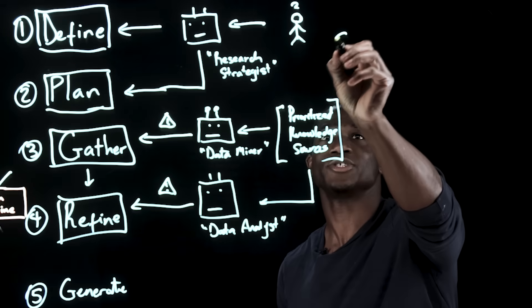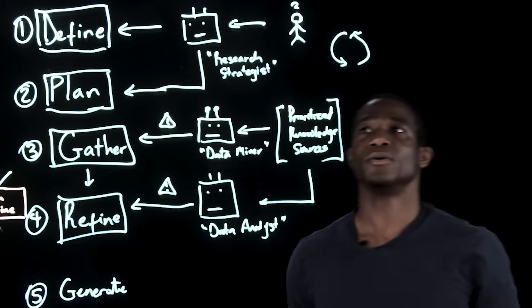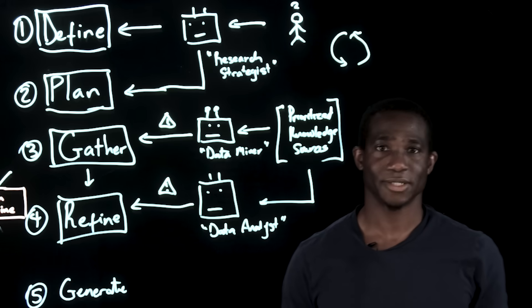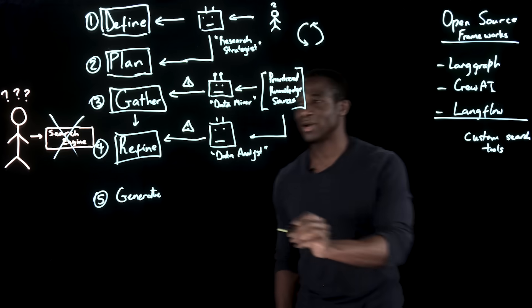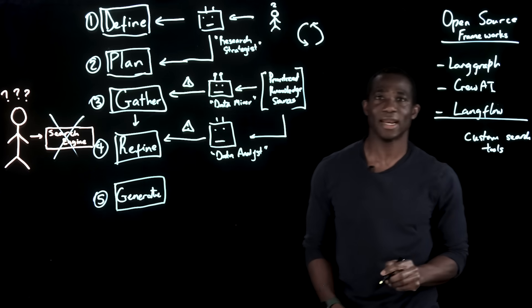So there may be some recursion happening with the research strategist. Which brings us to step five, where finally, we get to generate an answer.